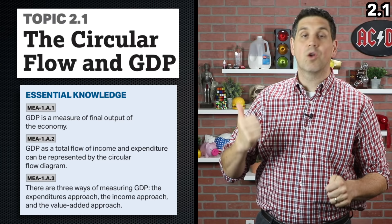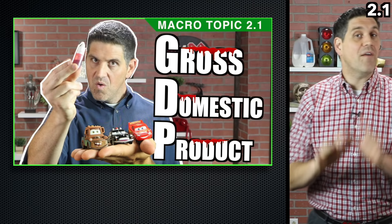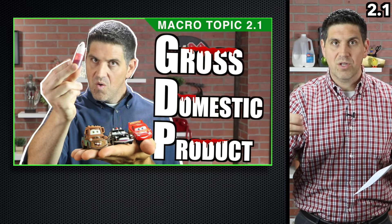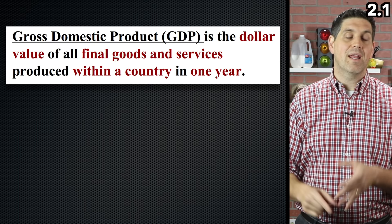It all starts with GDP — gross domestic product. Here in topic 2.1, we're talking about GDP and the three different ways to measure it: the expenditures approach, income approach, and the value added approach. I'll also talk about what's included and not included in GDP. Now, the definition of GDP is the dollar value of all final goods produced in a country's border in a given year. The key is final goods — we're not looking at intermediate goods. We're talking about inside the country's border in a year.